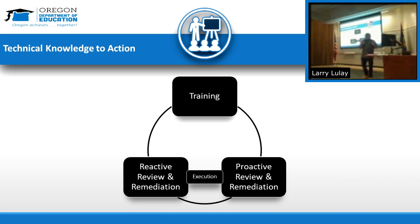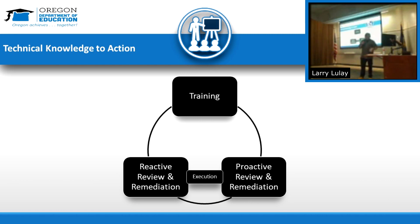When we put together training, management said 'go train the employees' — like one training and everybody's done. First of all, anyone who looks at WCAG realizes you can't train it that fast. Second, you quickly realize: what would someone need to know about a particular WCAG rule they'll never apply? So we identified groupings instead.